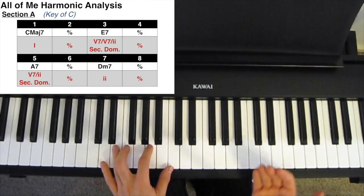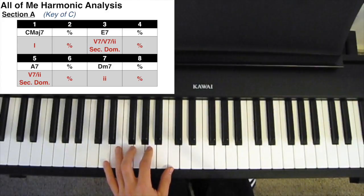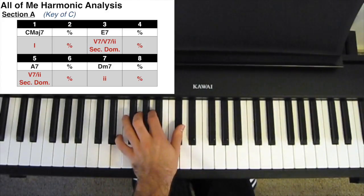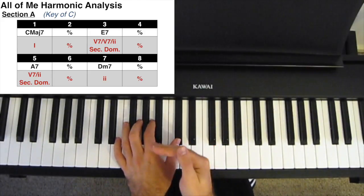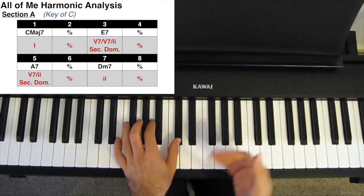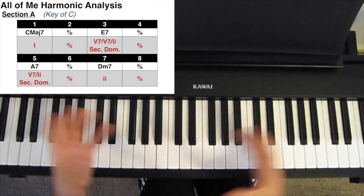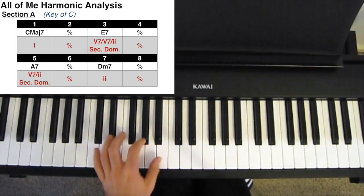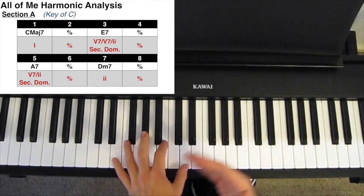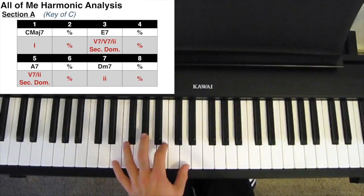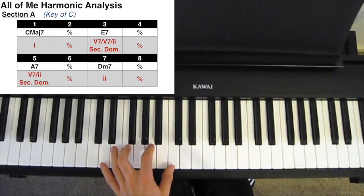The 2 chord is preceded by a secondary dominant, a 5 of 2, and that is preceded by another secondary dominant, a 5 of 5 of 2, which is our E7. I would analyze this first section as a 1, going to a tertiary 5 of 5 of 2, going to a secondary 5 of 2, going to the 2.